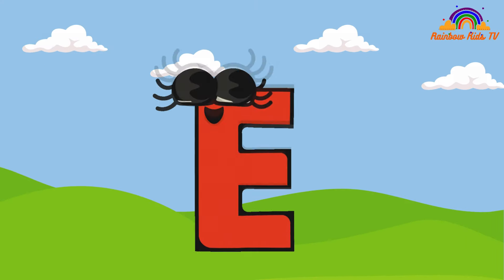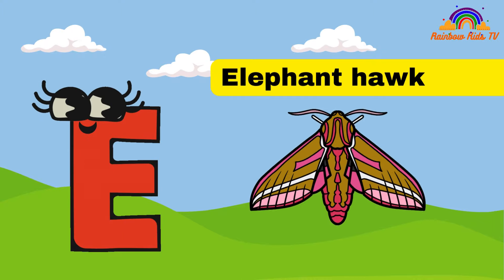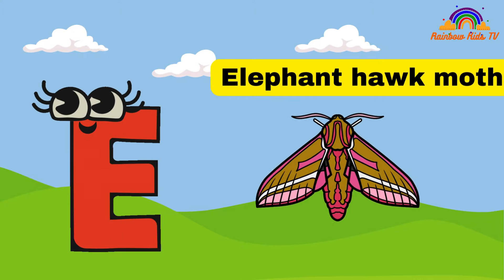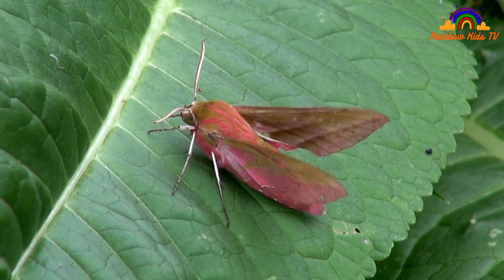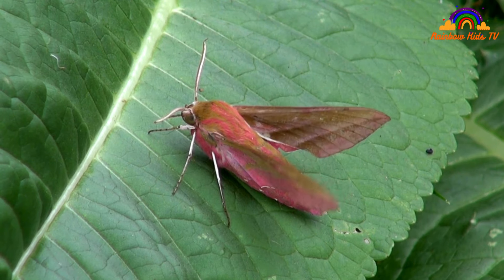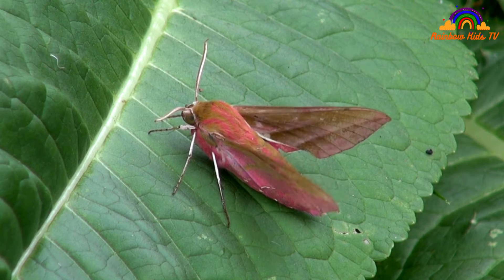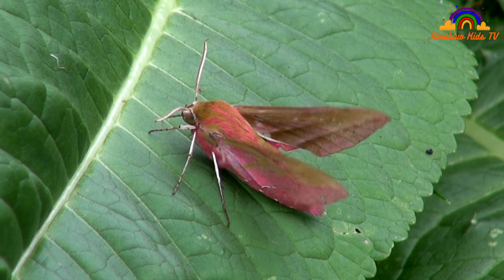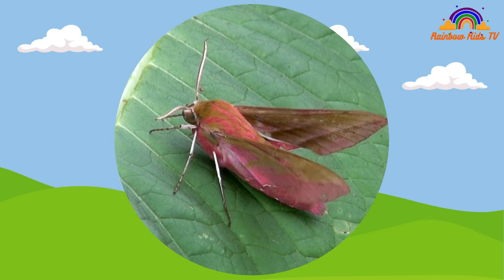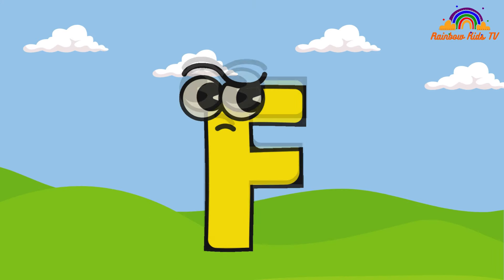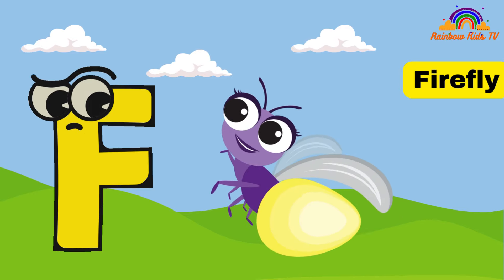E. E is for Elephant Hawk Moth. F. F is for Firefly.